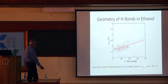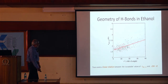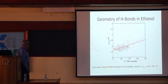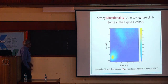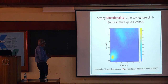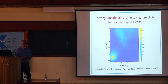For the molecules lying within this distribution, there appears to be a linear relationship between the O–H–O distance and the O–H–O angle. Strong directionality appears to be the key feature of hydrogen bonds in the liquid alcohols, which is consistent with what Professor Guru Rao mentioned earlier.